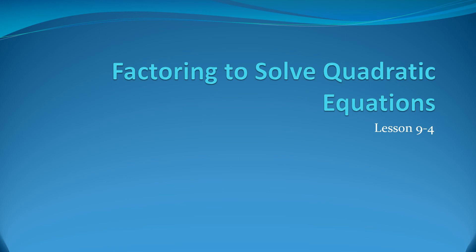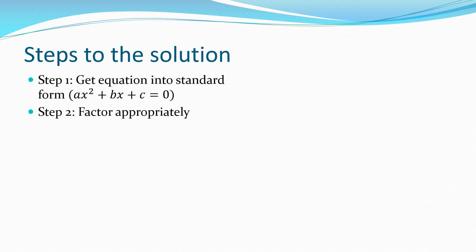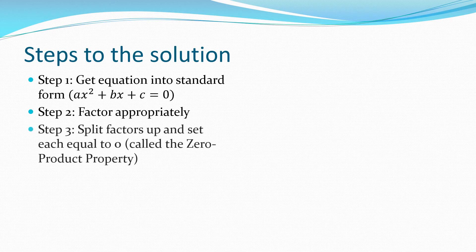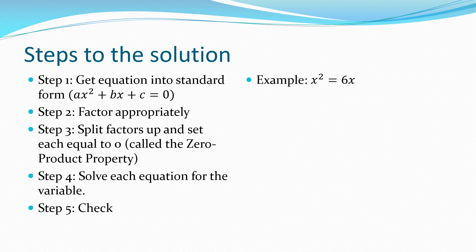This is lesson 9-4: Factoring to Solve Quadratic Equations. Here are the steps. First, get the equation in standard form: ax squared plus bx plus c equals zero. Next, factor appropriately — meaning factor completely. Then split the factors up and set each equal to zero using the zero product property. Next, solve each equation for the variable. Finally, go back to your original equation to check.